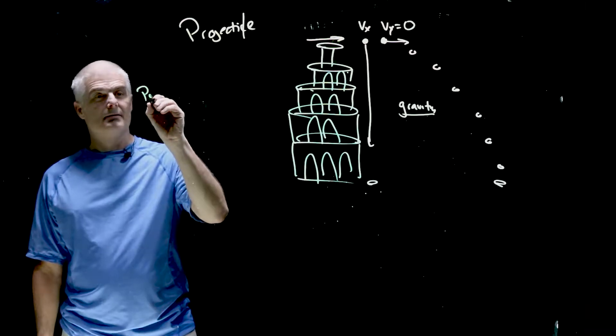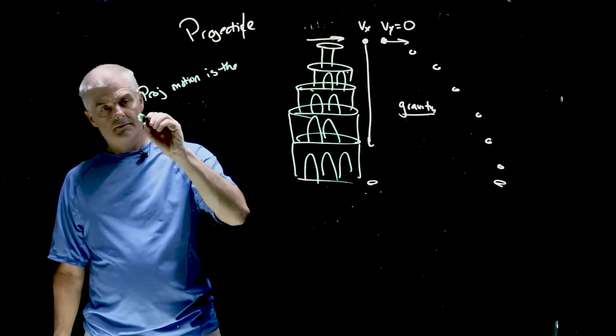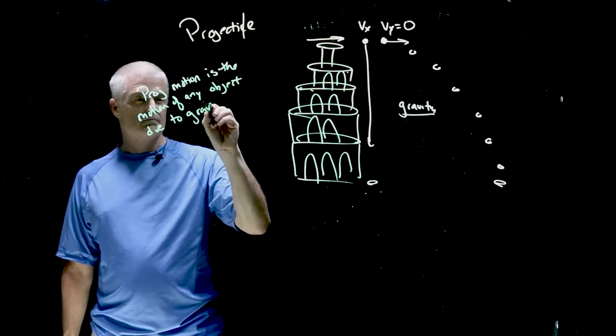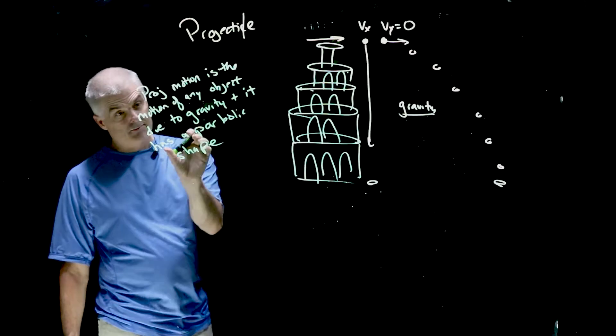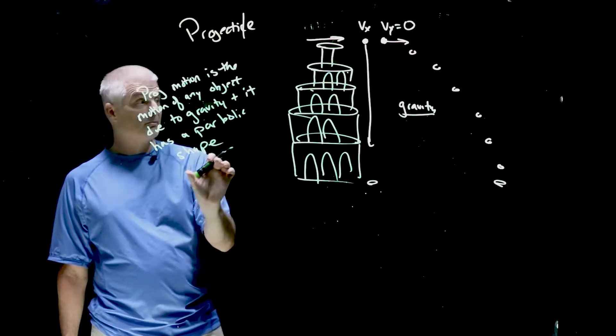Alright, so we can say this: projectile motion is the motion of any object due to gravity, and it has a parabolic shape.